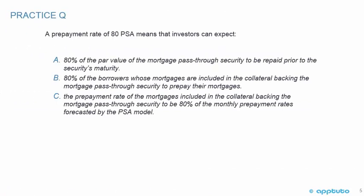Practice question: A prepayment rate of 80 PSA means that investors can expect: A. 80% of the par value of a mortgage pass-through security to be repaid prior to maturity; B. 80% of the borrowers whose mortgages are included in the collateral to prepay; or C. the prepayment rate of the mortgages to be 80% of the monthly prepayment rates forecasted by the PSA model.